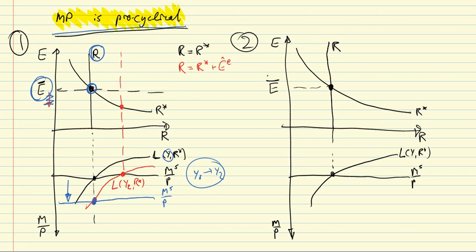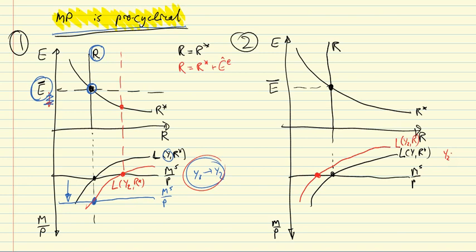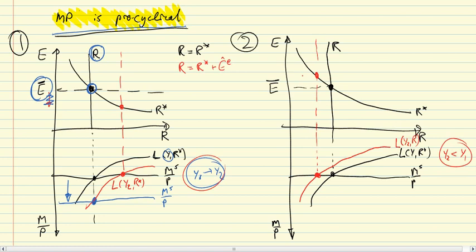Let's assume the reverse example — a domestic recession, a contraction. So instead of an expansion from Y1 to Y2, we have a contraction from Y1 to Y2, and money demand falls. This is L(Y2, R) where Y2 is smaller than Y1, and we have a recession. That would imply a lower interest rate, so that there's upward pressure — meaning pressure for a depreciation of the exchange rate — in order to maintain equilibrium in the foreign exchange market.